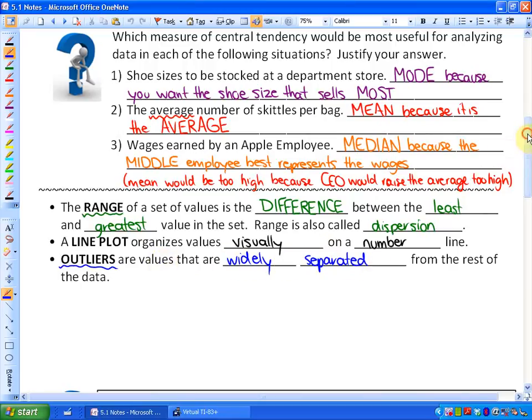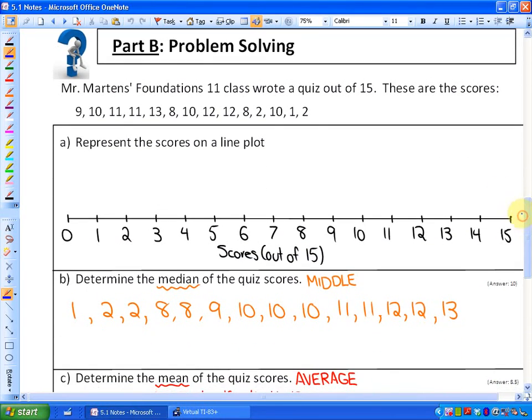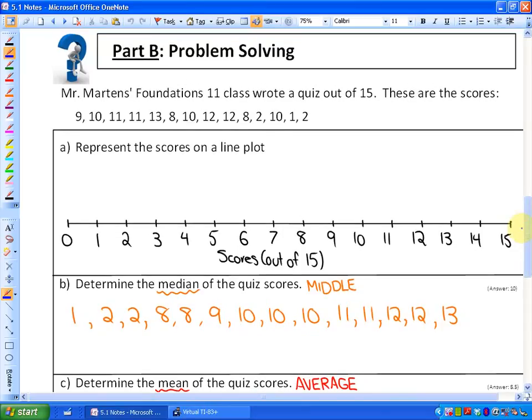So what we're going to look at now, and you might want to pause this if you want to take the notes, but we're going to look at now as an example of one of my math classes and we'll apply all these concepts. It says Mr. Martin's Foundations 11 class wrote a quiz out of 15, and these are the scores. So I have, I think it's 14 scores here of how my class did out of 15. Something that's often useful is representing these scores on a line plot, because then you can actually get, because right now you don't really know if there's good scores, bad scores, what the range is, if there's kind of a mean that looks kind of average. So what we do is you could represent this on a line plot.